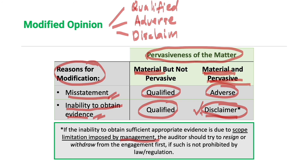The auditor also disclaims when there are multiple uncertainties and the auditor cannot conclude based on those uncertainties and the financial statements. As for the question of what we mean by pervasiveness — how we determine whether a matter is only material but not pervasive, or both material and pervasive — it is a matter of professional judgment on the part of the auditor. There are guidelines provided in our discussion of the auditor's report, which has to do with the significance of the matter, and we will cover that further when we get to the auditor's report portion.